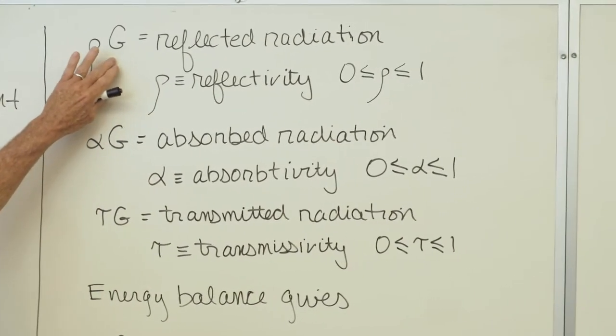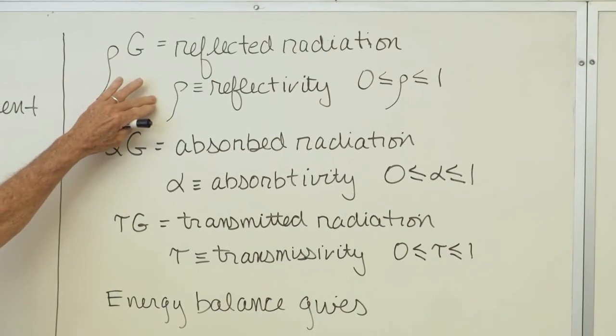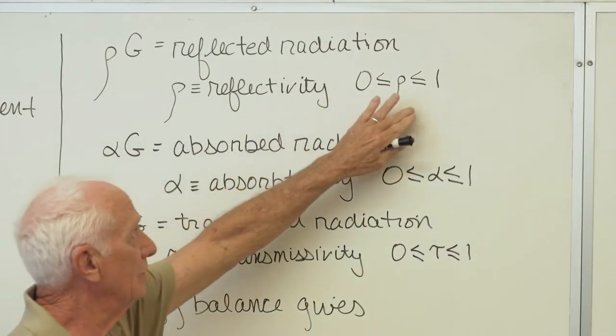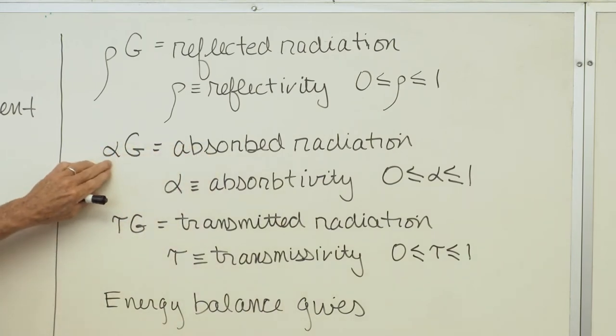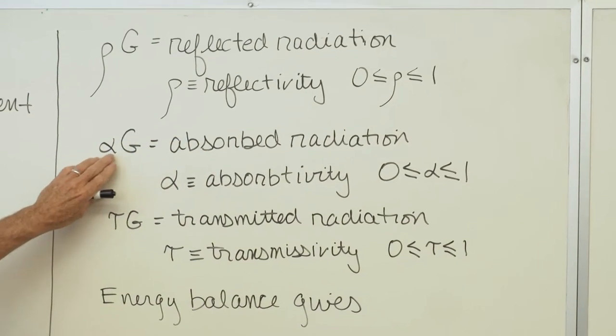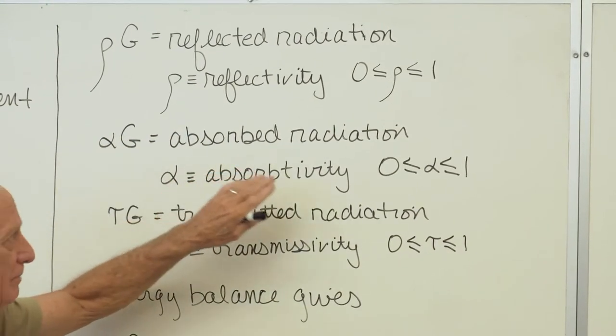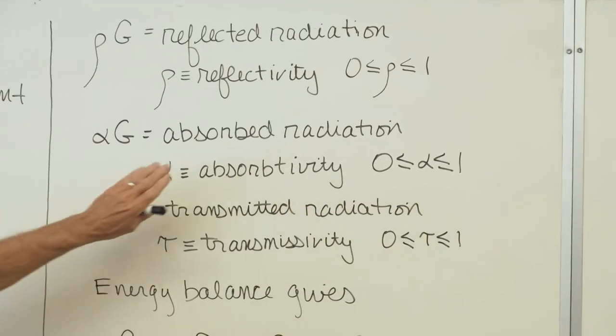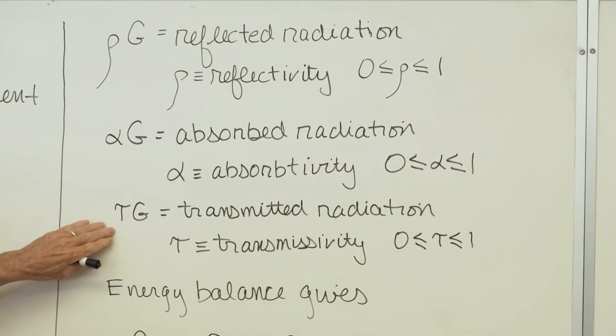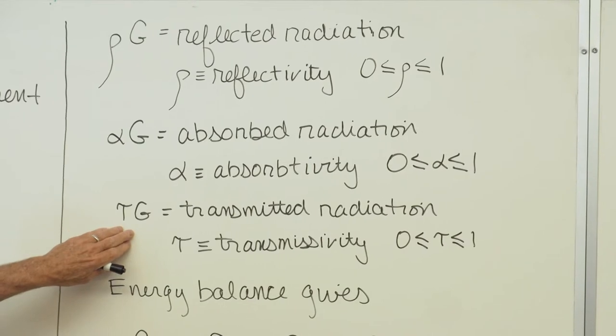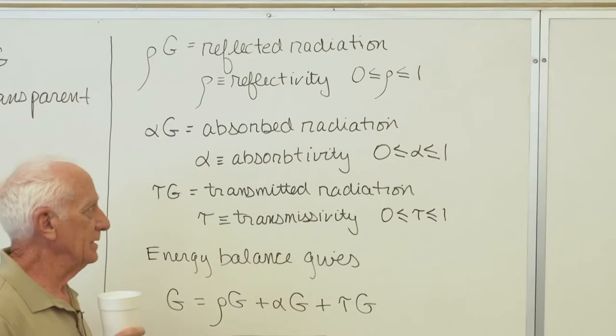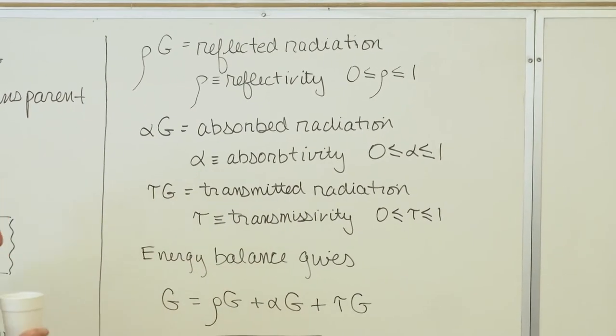Rho times G, where rho is reflectivity, dimensionless between 0 and 1. Absorbed, alpha times G, where alpha is absorptivity, dimensionless between 0 and 1. Transmitted radiation, tau times G, where tau is transmissivity, dimensionless values between 0 and 1.